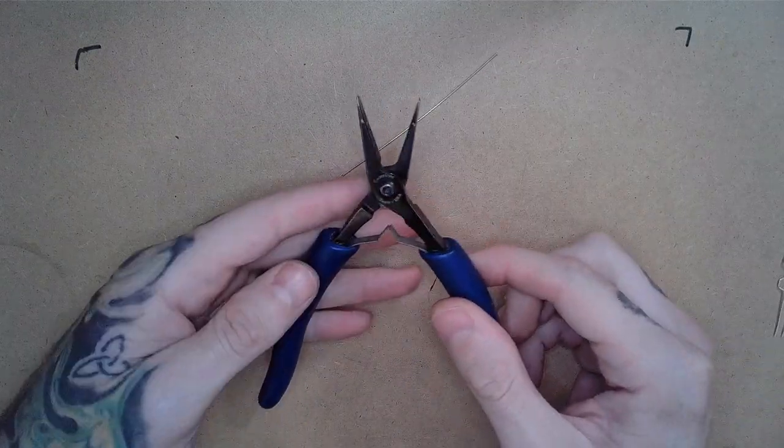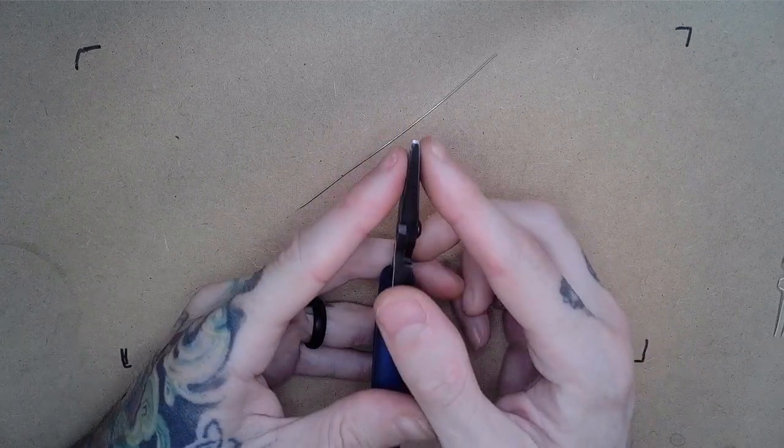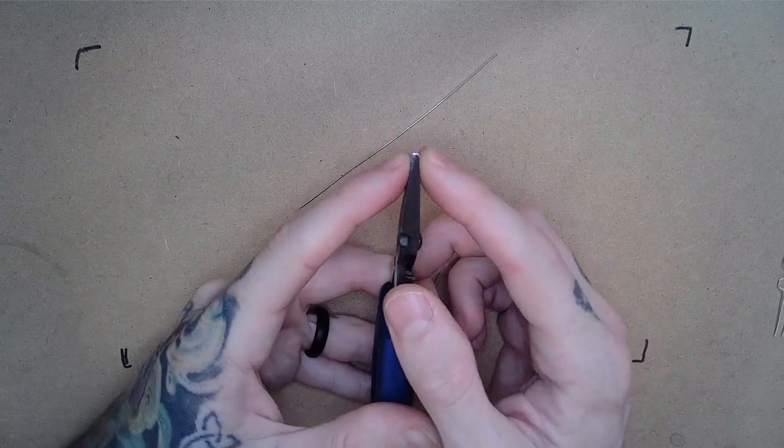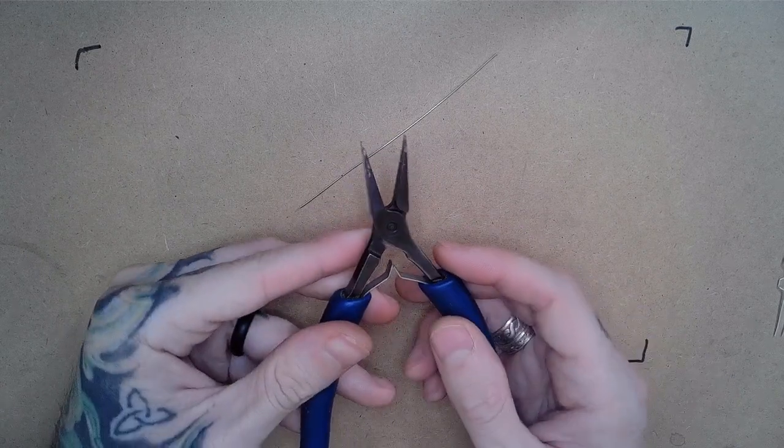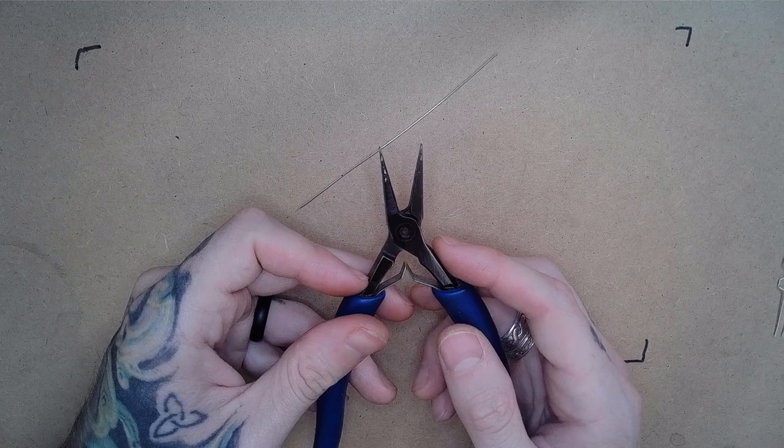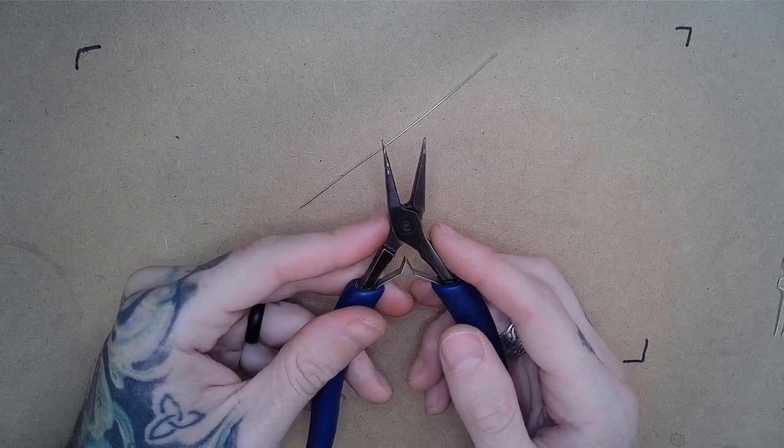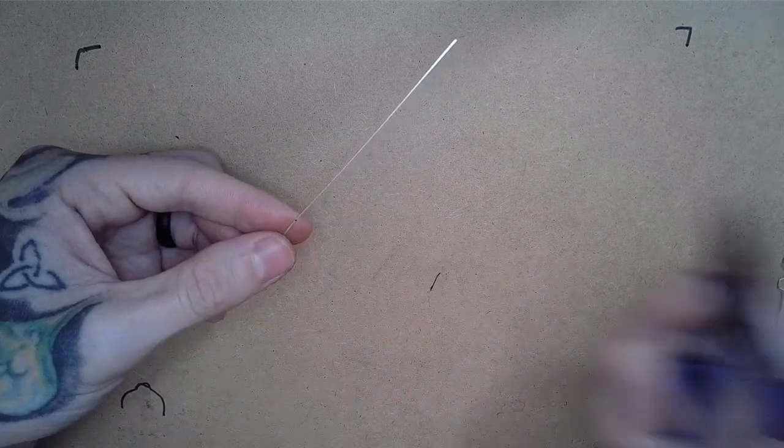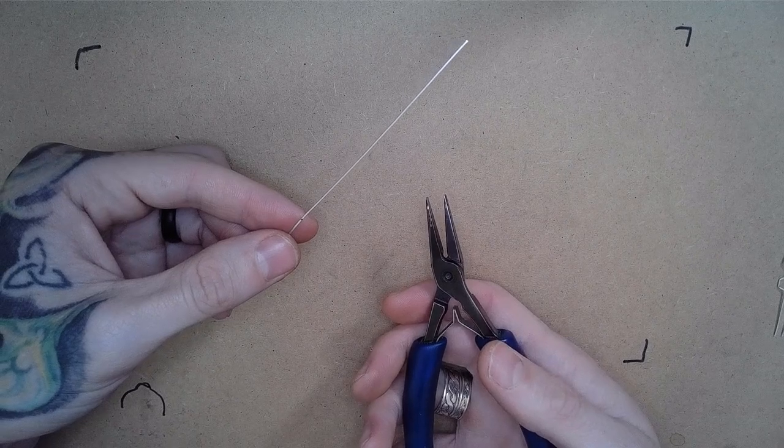The pliers that I'm using for this project are flat and about three millimeters wide at the tips of the jaws. I'm going to use the pliers to measure each length of the honeycomb. Let's go ahead and dive in and I'll show you what I mean.